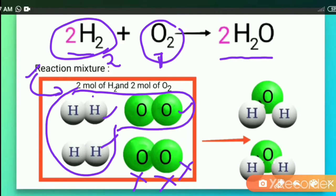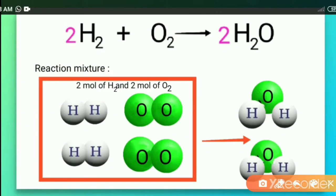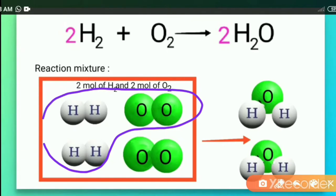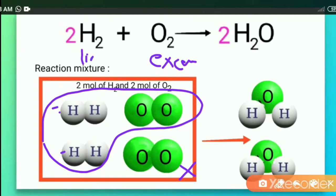So which one is left unreacted? Two moles of hydrogen react with one mole of oxygen, and one mole of oxygen is left unreacted. We can say oxygen is present in excess because after completion of the reaction, oxygen is left behind. Hydrogen is completely consumed — there is no H2 remaining in the mixture — so hydrogen is the limiting reagent.